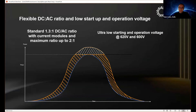The flexible DC/AC ratio provides more energy yield. Increasing the DC/AC ratio extends the time the inverter generates power earlier in the morning and later in the evening. All those additional generation periods add up to a higher annual yield. The higher the DC/AC ratio, the higher the yield you receive.